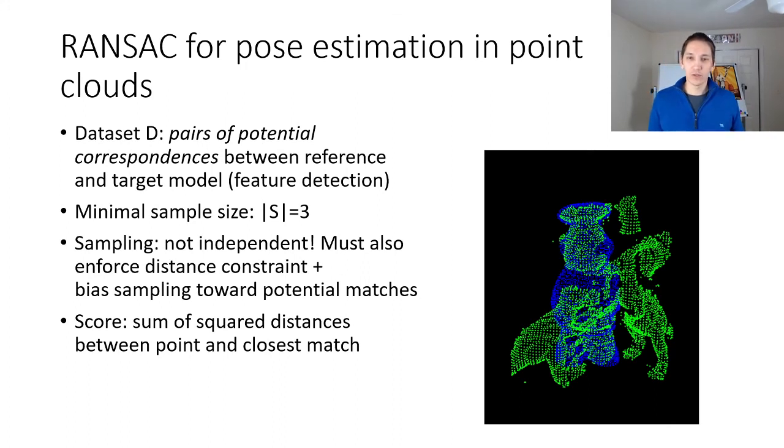For point clouds we can do a similar sort of thing. Here the minimal sample size is three points in the source and three points in the target. The sampling should not be independent because we have to figure out a rigid transform and so thereby keeping the distances between points mutually equal both in the source sample and the target sample is really important. Moreover, it's important to bias your sampling towards potential matches either by using some sort of feature recognition or plane normal matching to help this sample more likely to get a set of inliers. And typically I'll use sum of square distances between the point and the closest match as my ultimate score.